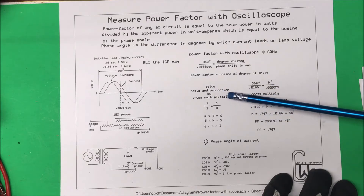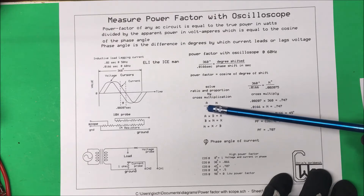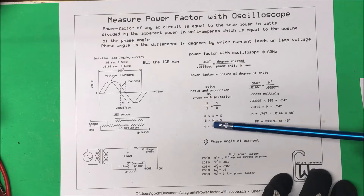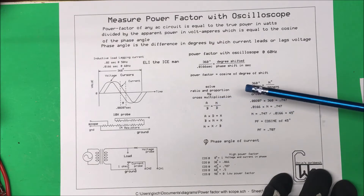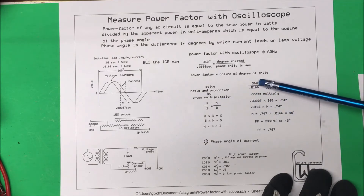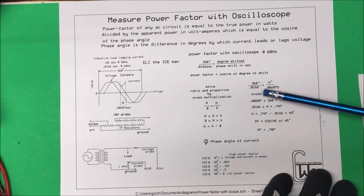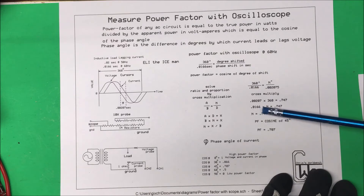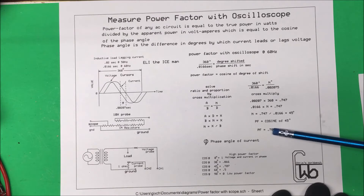To solve ratio and proportion, we cross multiply: A times D equals X, and B times N equals X, then divide B into X to get N. So we take 360 times our time shift, which gives us 0.747, then divide by 0.0611, giving us 45 degrees. Taking the cosine of 45 degrees gives a power factor of 0.707.